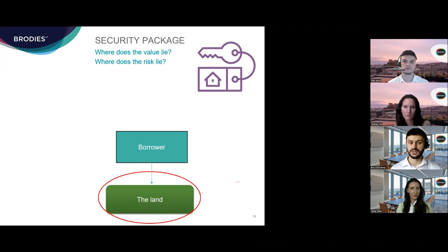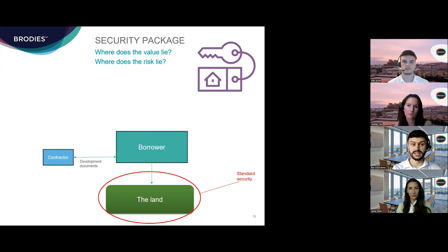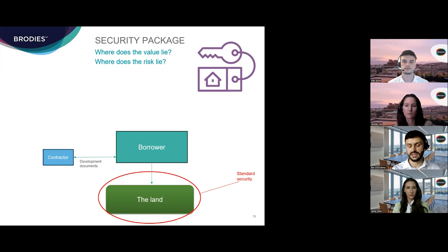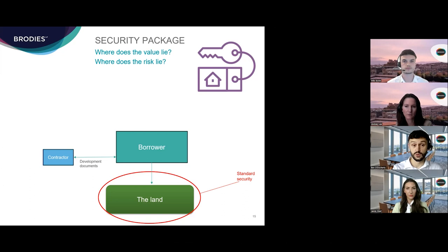An instructive starting point in any finance transaction is to ask where does the value in the borrower group lie, and conversely where does the risk to the lender lie. The logical starting point is to consider the property itself — the land on which the development is going to be built. As any Scottish real estate or banking lawyer will tell you, the only way to competently take fixed security over heritable property in Scotland is by way of a standard security, which is the Scottish equivalent of an English legal mortgage.